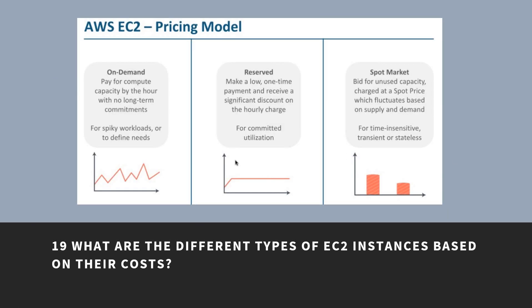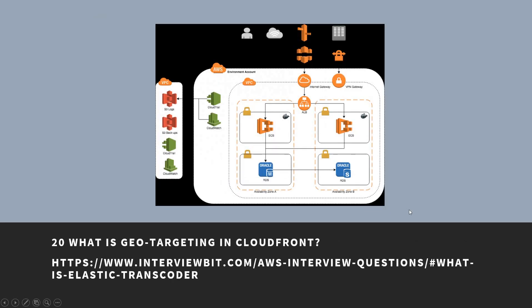What are the different types of EC2 instances based on costs? The three types of EC2 instances based on costs are: on-demand instance, reserved instance, and spot instance. What is geotargeting in CloudFront? Geotargeting enables the creation of customized content based on the geographic location of the user, allowing you to serve content that is more relevant to the user.